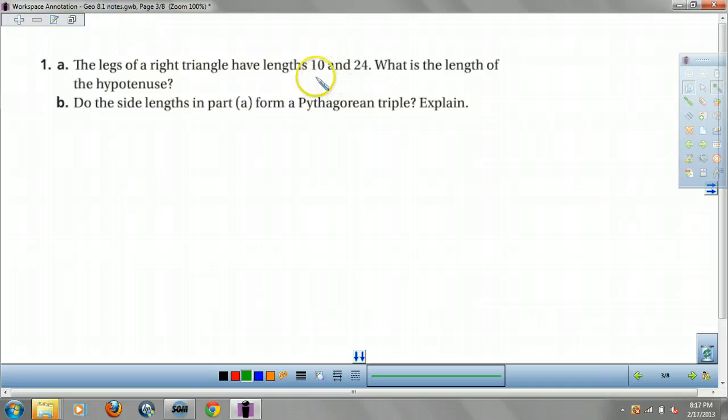The legs of a right triangle have legs of 10 and 24. What is the length of the hypotenuse? Well, we have a right triangle. The legs are 10 and 24. How do we find this guy? Well, we do 10 squared plus 24 squared equals X squared.